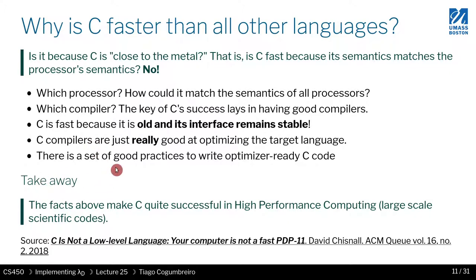There's also a set of good practices on how to write C code that is very easy to optimize. A key example is in high performance computing where people write a C dialect — it's C, but the way it's written matches the actual compiler they're using. So the program is bound to that compiler, and if you run it with another compiler it might not run as fast. There's also a nice paper on exactly this idea of C not being understood as a low level language, which you might want to read if you're interested.